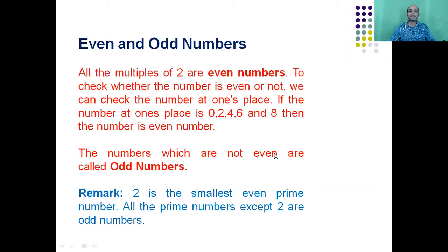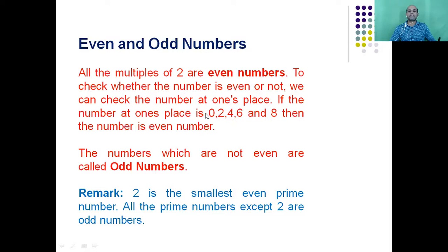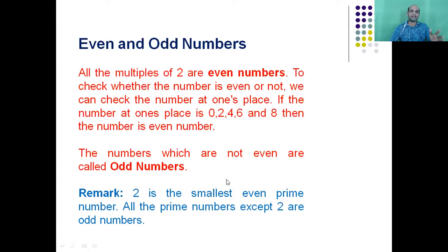Even numbers are nothing but numbers either divisible by 2 or multiples of 2. For example, if the digit at the unit place is 0, 2, 4, 6, or 8, that number is an even number — like 10, 20, 30, 40, 50, 290, and so on. Numbers which are not even are called odd numbers. If the digit at the unit place is 1, 3, 5, 7, or 9, we call those odd numbers.